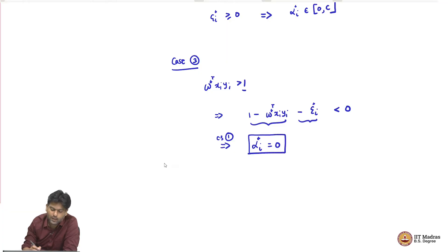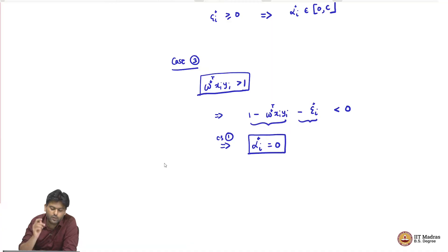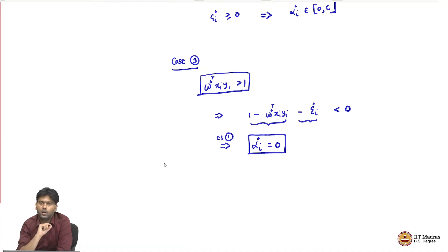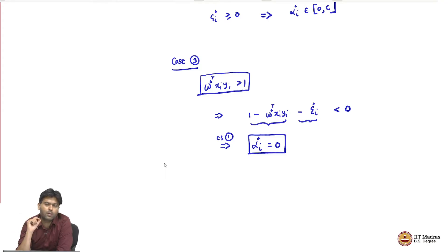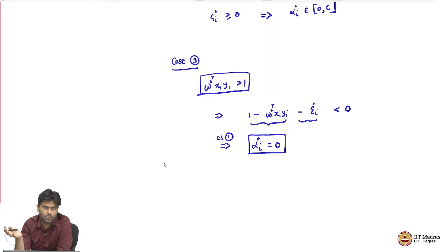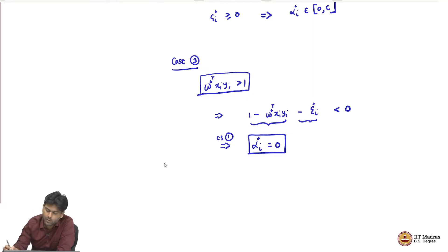What does this tell us? This tells us that those points which are classified with margin strictly greater than 1 do not matter — they do not contribute to W star. That is the conclusion we are able to derive from the primal point of view.